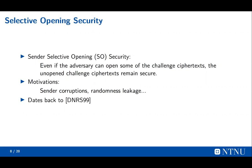For example, sometimes the sender's computer may be corrupted by some hacker, and the hacker can get all the information about the sender, including messages and randomness. Or the sender may use some insecure randomness generator, and the adversary can recover such insecure randomness.